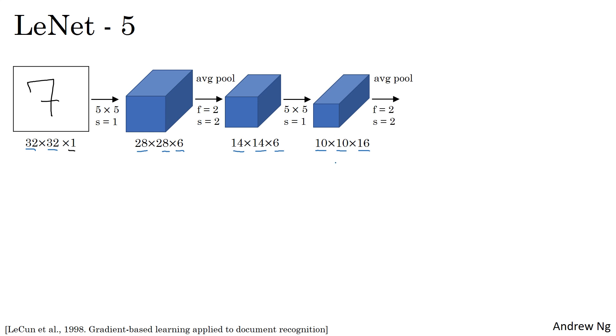Then another pooling layer reduces the height and width by a factor of 2, and you end up with 5 by 5 by 16. If you multiply out these numbers, 5 by 5 by 16 multiplies out to 400. The next layer is then a fully connected layer that fully connects each of these 400 nodes with every one of 120 neurons.